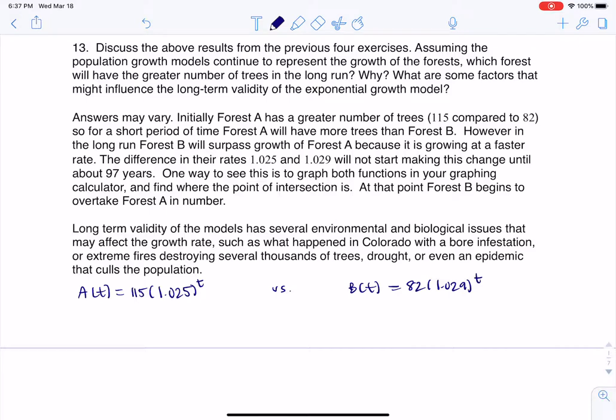So the first question we were asked was which forest will have the greater number of trees in the long run. So let's compare a couple of numbers. So initially, Forest A had 115 trees and Forest B had 82. So that's where you see me saying initially Forest A is winning, because they have 115 trees compared to the 82 trees initially starting in Forest B.